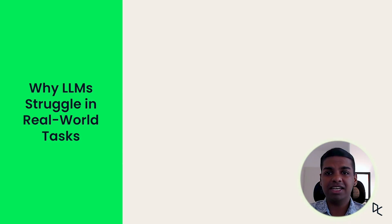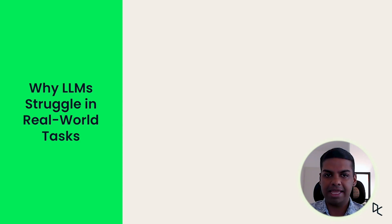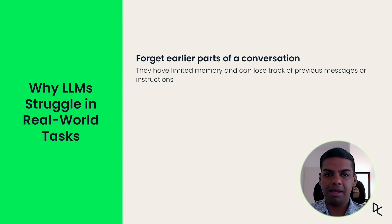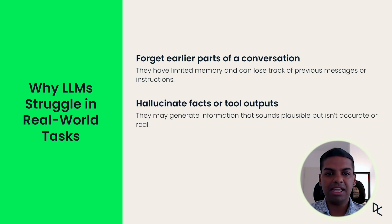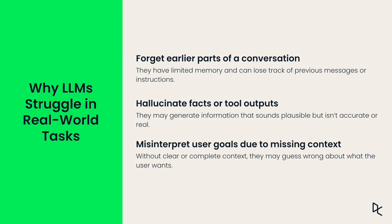Large language models can actually do amazing things, but in practice they often break down when tasks are too complicated. For example, they may forget earlier parts of conversations, generate information that sounds plausible but is not accurate, or not understand what the user actually wants and produce a wrong output. When these occur, it is a sign that there is an issue with the structure in which we feed the model information.